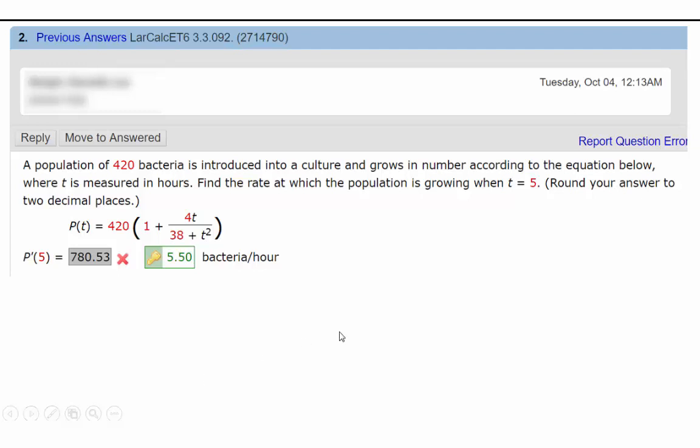This question said, a population of 420 bacteria is introduced into a culture and grows in number according to the equation below where t is measured in hours. Find the rate at which the population is growing when t equals 5. Do you know why we're supposed to take the derivative and plug it in?